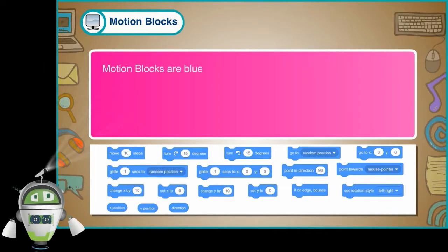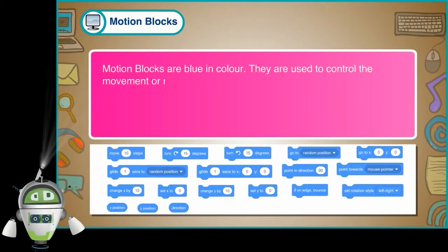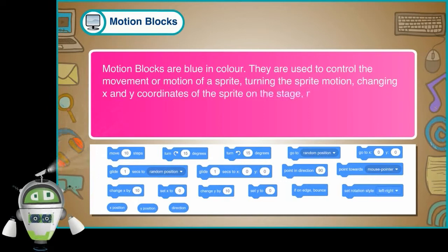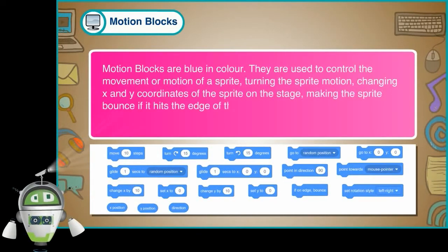Motion Blocks are blue in color. They are used to control the movement or motion of a sprite, turning the sprite, changing x and y coordinates of the sprite on the stage, making the sprite bounce if it hits the edge of the stage, etc. They are only used for sprites and not for backdrops.